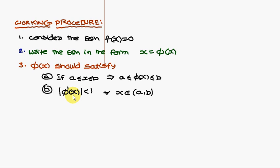The second condition is that the modulus of phi'(x) must always be less than 1 for all x belonging to the interval [a, b].